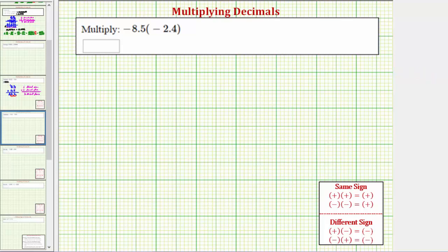We're asked to multiply negative 8.5 times negative 2.4. Let's first determine the sign of the product. Because we have a negative times a negative, the product will be positive. So because the product is positive, let's go ahead and find the product of positive 8.5 and positive 2.4.